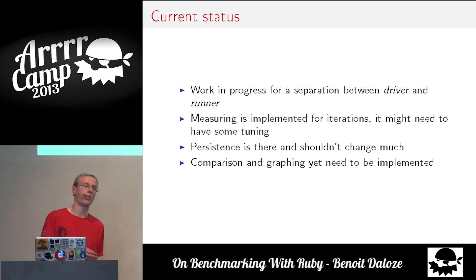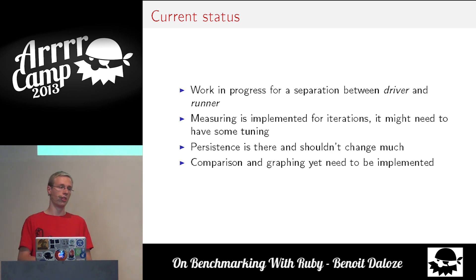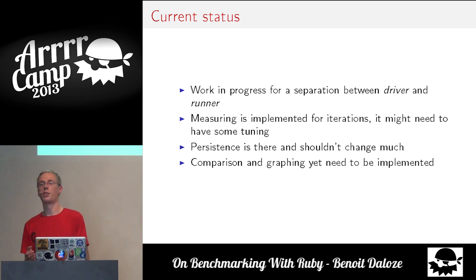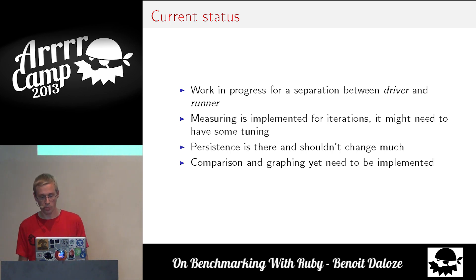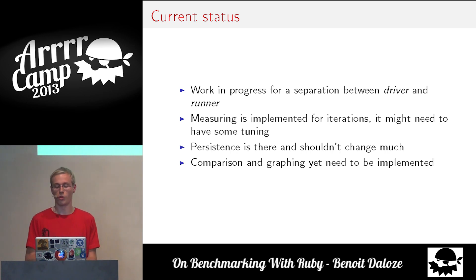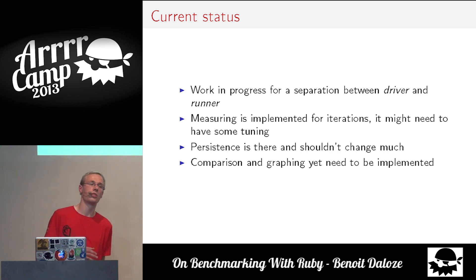So the driver could be any Ruby — it doesn't matter at all — and the runner is for every Ruby you want to benchmark: Ruby 2.0, JRuby, Rubinius — it launches each process loading only what's really necessary. The measurement for iteration I think is pretty nice and much more stable than any other library I've seen, though it might still need some tuning. The persistence is there and works quite nicely, but comparison and graphing are not yet implemented, so for now you have to interpret results yourself.